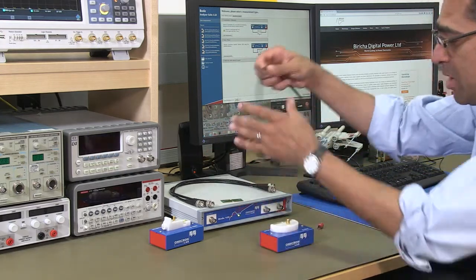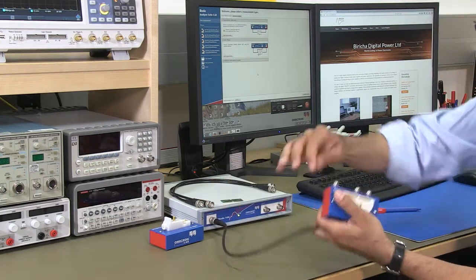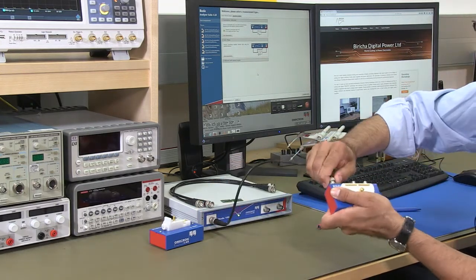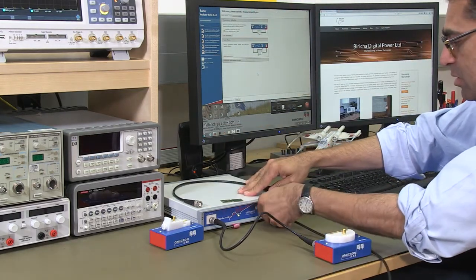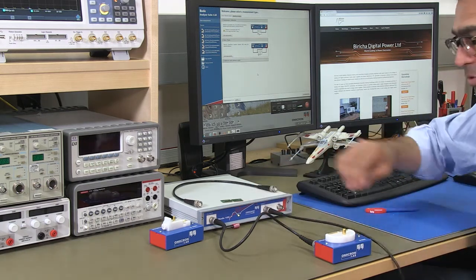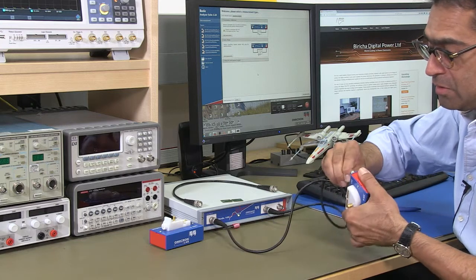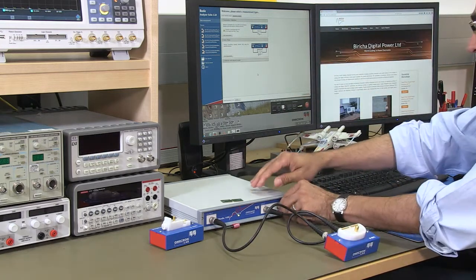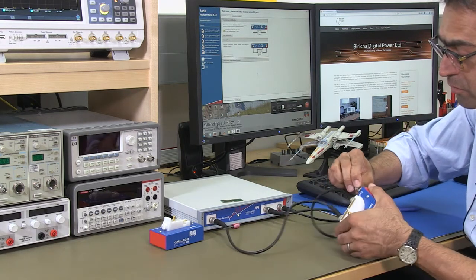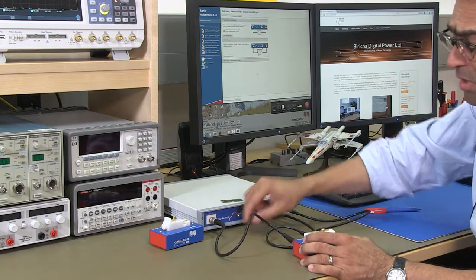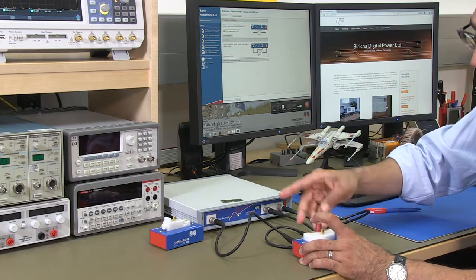We're going to connect them up. You need three BNC cables. The output goes directly to source, then channel one of the Bode goes to channel one of the test fixtures, and finally channel two goes to channel two. So we can now put the capacitor into the test fixture in order to measure it.